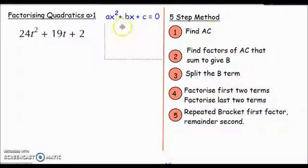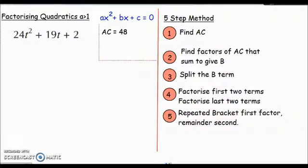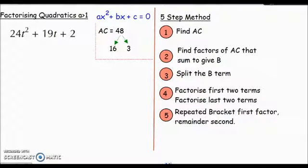Step 1: find AC. A is 24, C is 2. Times those together: 48. What factors of 48 make 19? All these terms are positive, so I'm not going to get any negative factors. What two positive factors of 48 add up to 19? Hopefully you found 16 and 3 were the ones you were looking for. Then we're on to step 3: split the B term up. We're going to rewrite this whole thing with the 19t split into 16t and 3t from the factors we found: 24t² + 16t + 3t + 2.